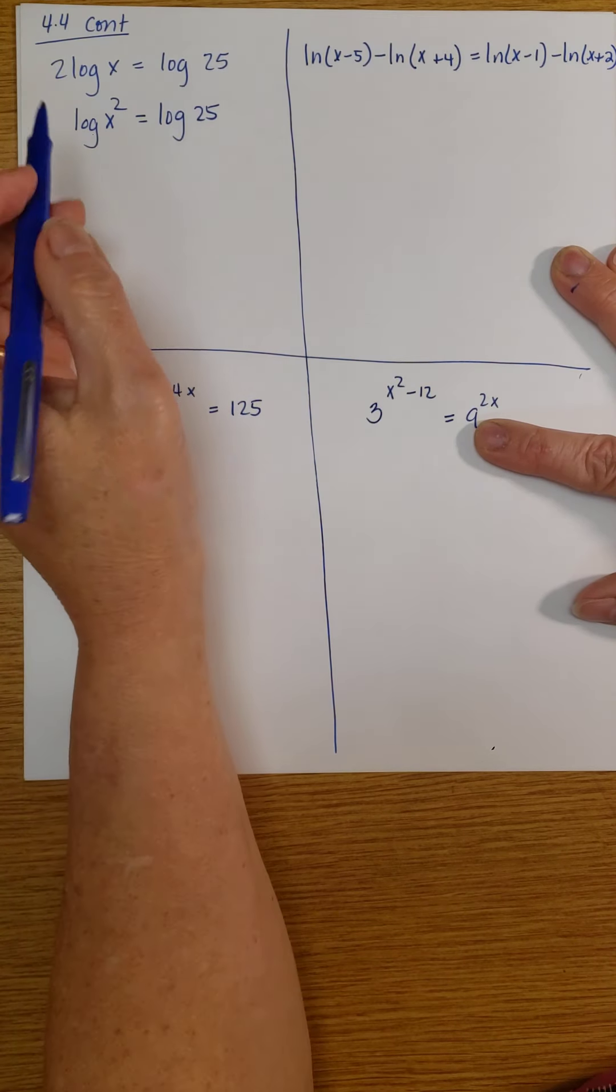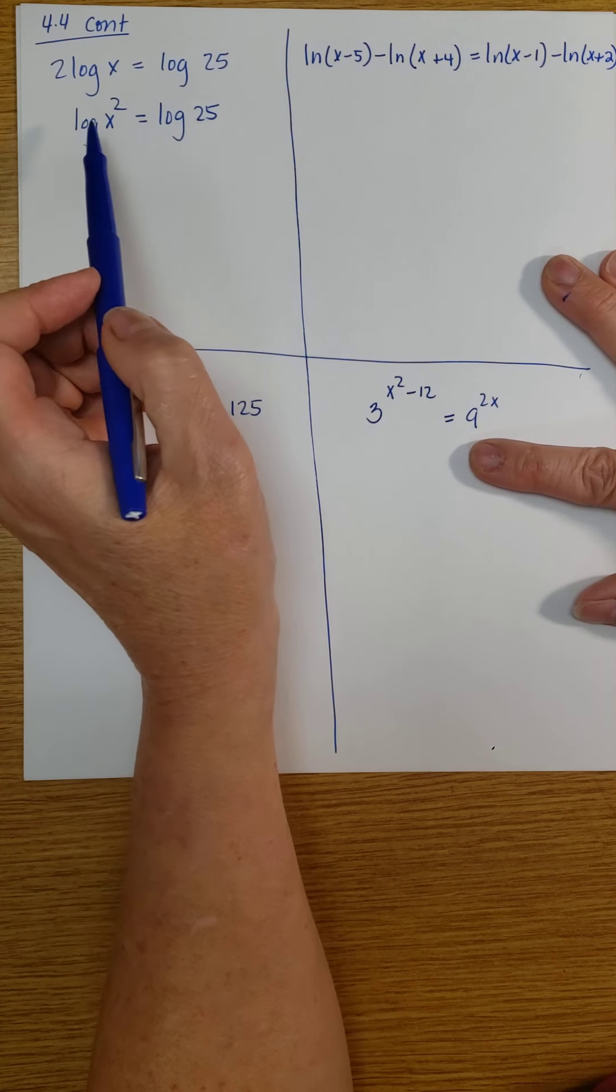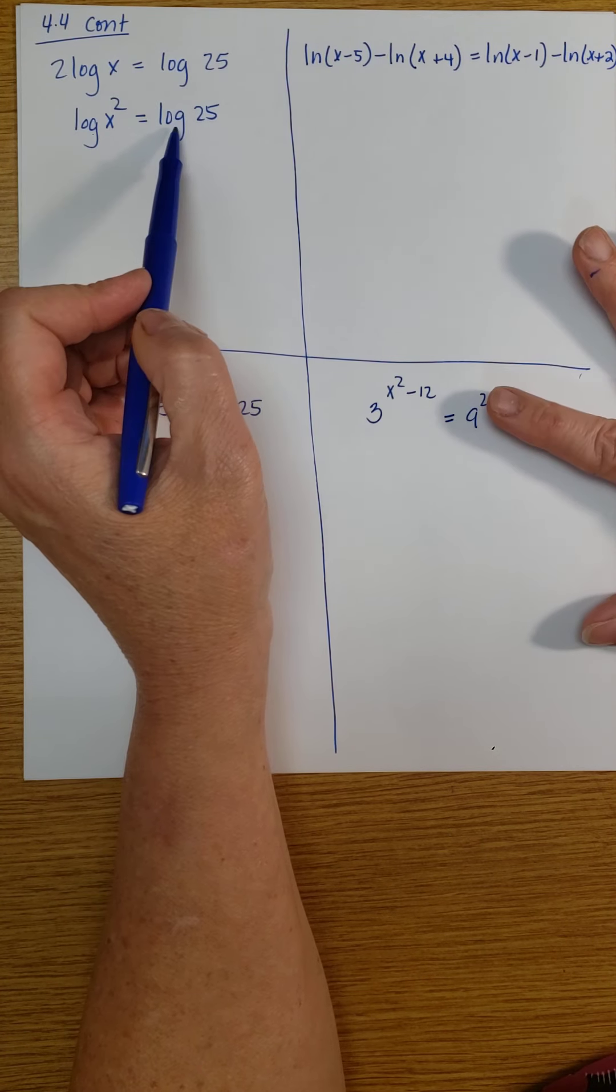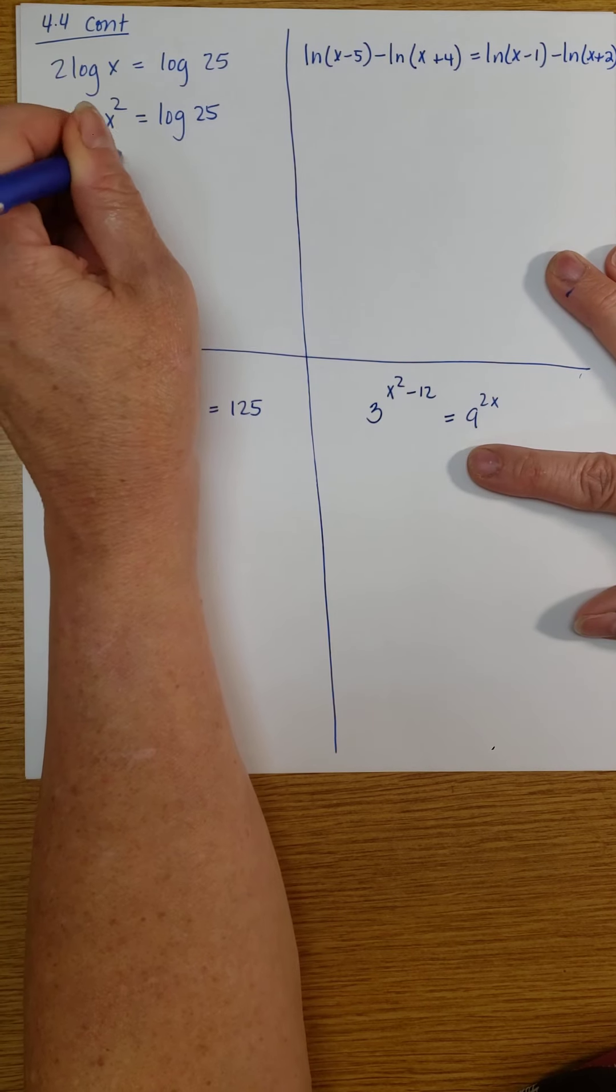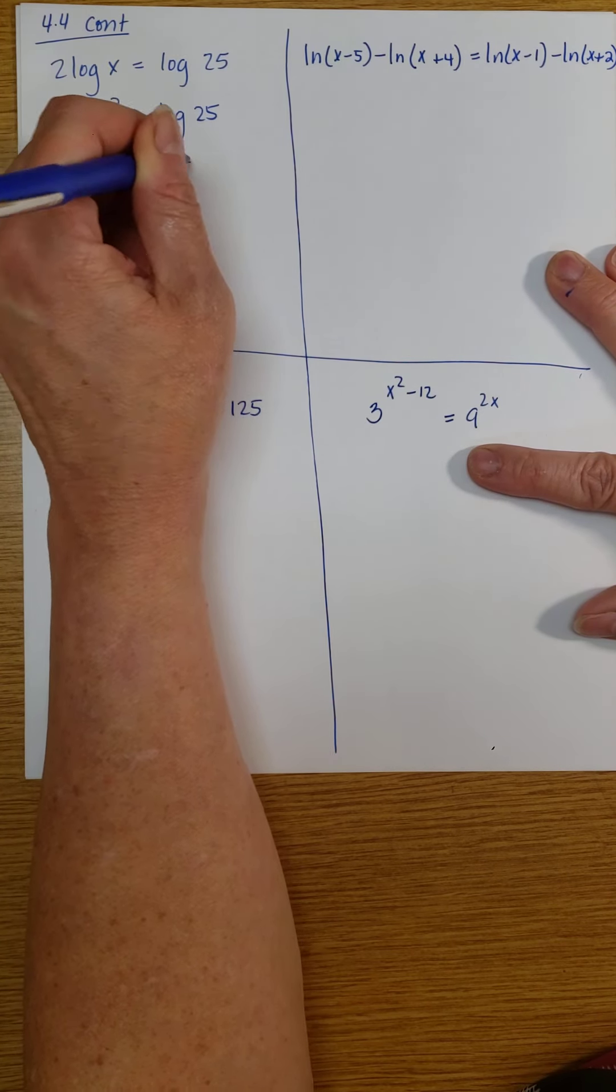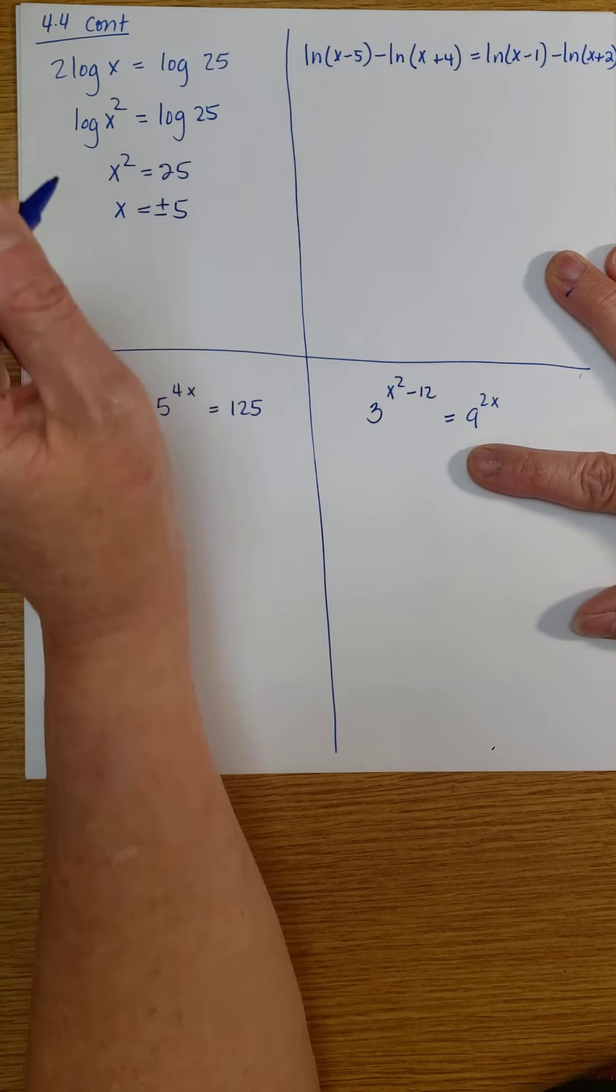I'm going to write this as log x squared equals log 25. And if you have two sides of the equation, each of which are logs with the same base, then you can just from this step say that x squared equals 25. And so x could either be plus or minus 5.